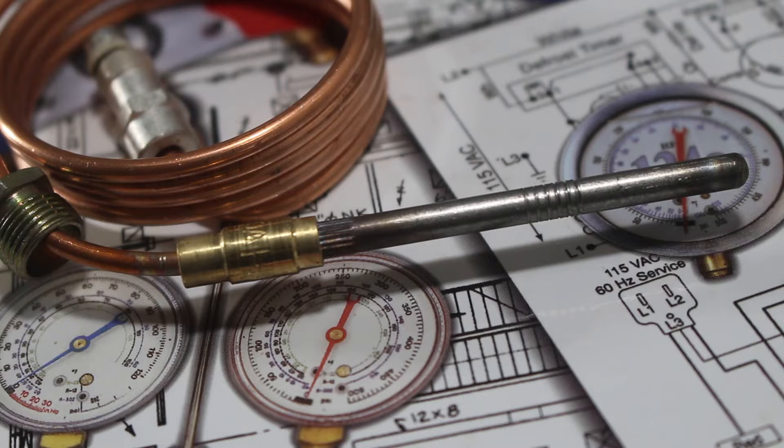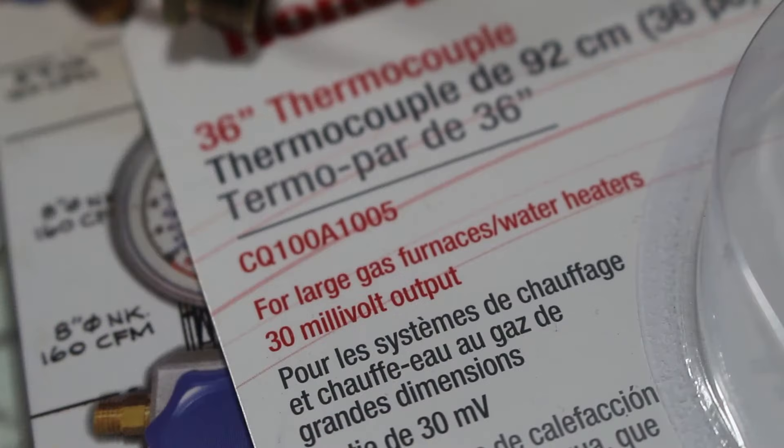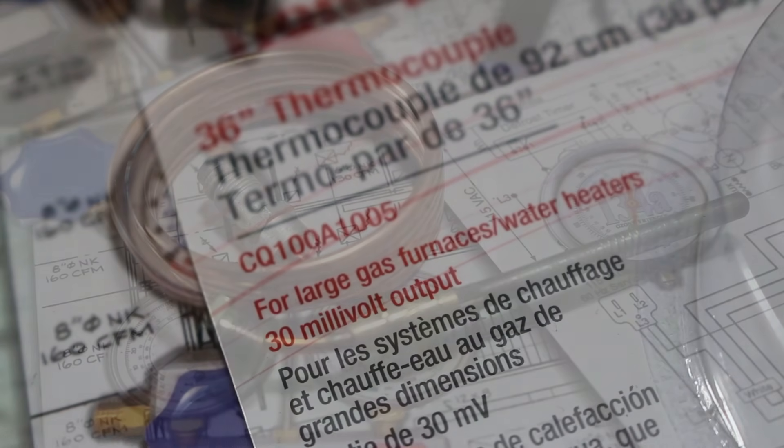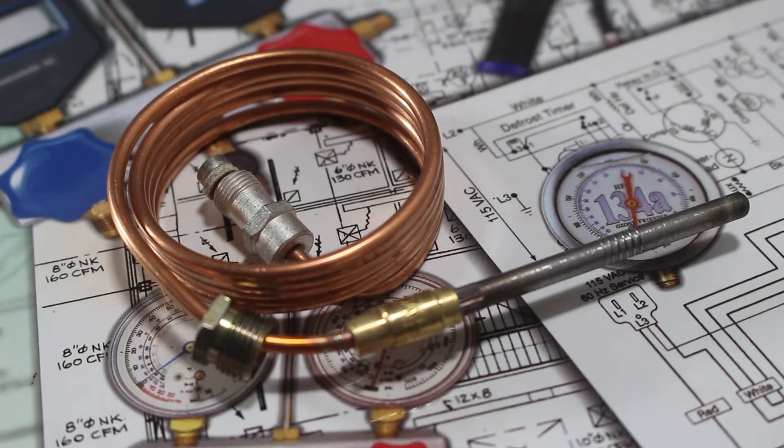When the point where these two metals meet are heated, a voltage is produced. This specific thermocouple has an output of 30 millivolts. So what this does is that this device actually generates electricity when it is heated.